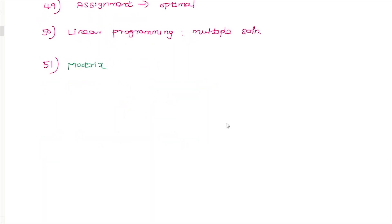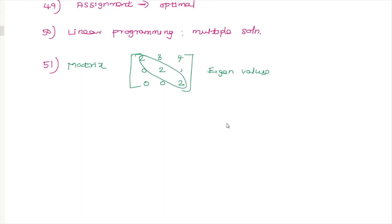For an upper triangular matrix, the eigenvalues are the diagonal elements — all zeros in this case. A different matrix with elements 8, 2, 5, and 3 gives corresponding eigenvalues that can be derived accordingly.